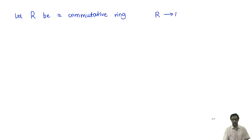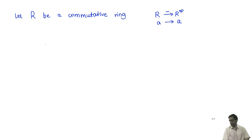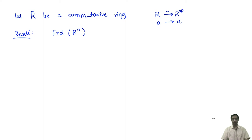Recall that in our notation, if I look at R^op, the identity map sends every element to itself. This is an isomorphism of R to R^op, because the operation in R^op is just the product in reverse order, but since R is commutative, AB is the same as BA. So the identity map from R to R^op is an isomorphism.